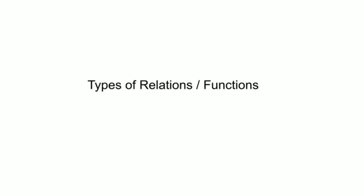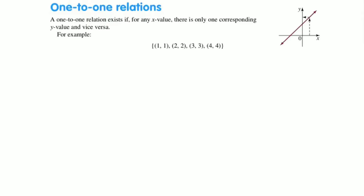Types of Relations, Including Functions. When discussing the types of relations and functions, we're generally talking about rules where we have y equals some function of x, or x squared, or so on. So we're generally dealing with x values and y values.